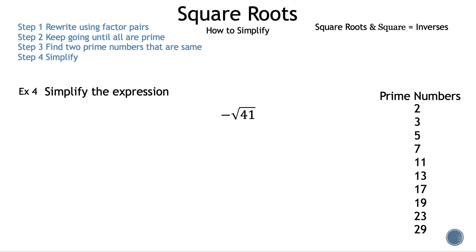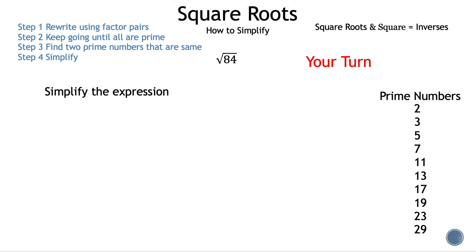Let's move on to example 4. Simplify the expression negative square root of 41. The first step is to find a factor pair of 41. The only factor pair is 1 and 41, which means 41 is prime. Since 41 is prime, it cannot be simplified further, and our final answer is negative square root of 41.